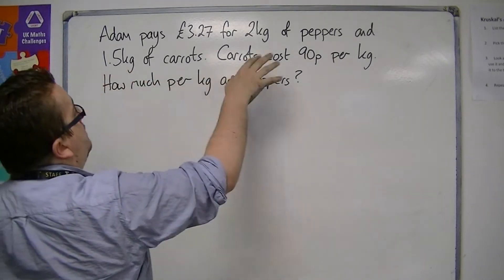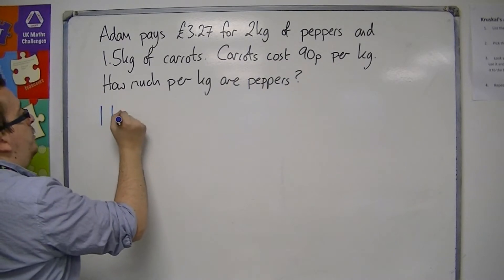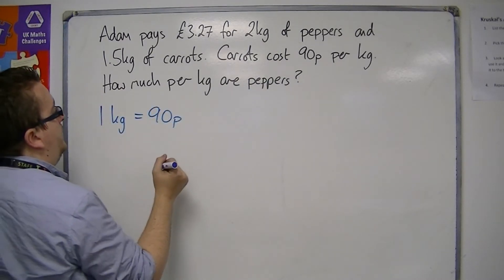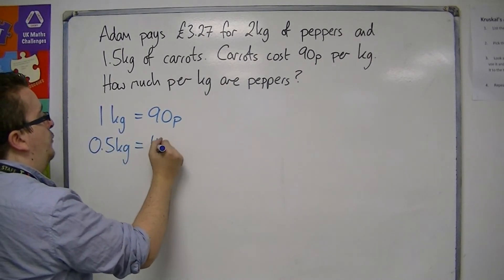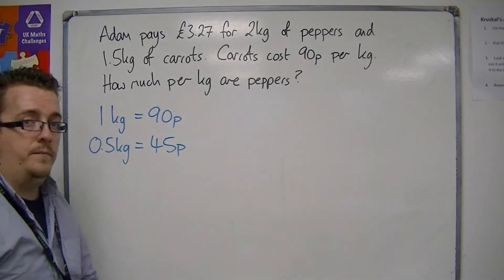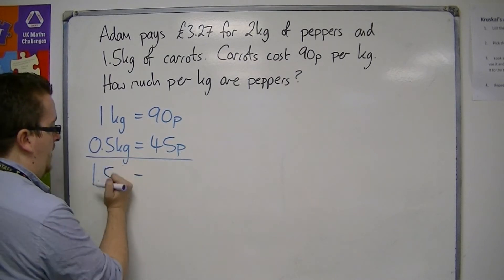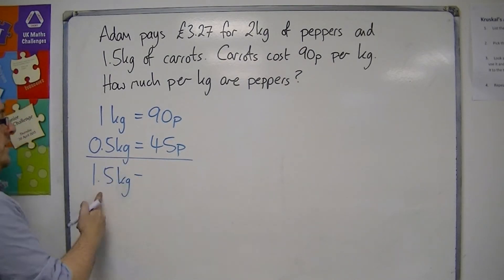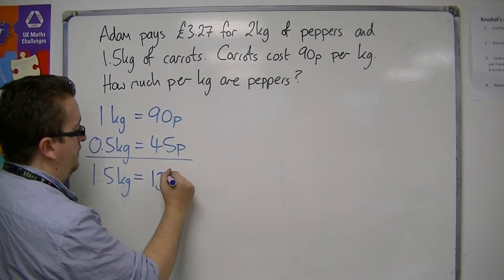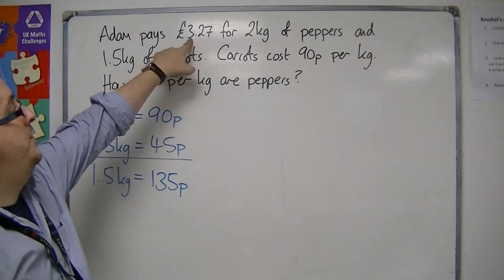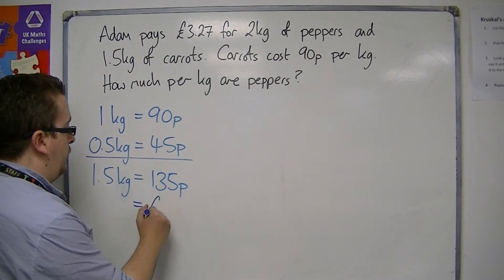We know that Adam has bought 1.5 kilos of carrots. We know that 1 kilo is 90p for carrots, so half a kilo is 45p — half of 90p. So 1.5 kilos is 135p. Because the rest of the problem is in pounds, we might want to turn the pence into pounds, so that's £1.35.